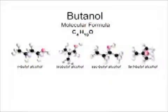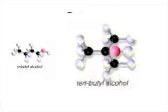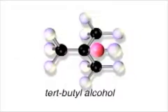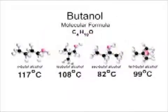In secondary butyl alcohol, the OH group is attached to one of the two inside carbon atoms in the four-carbon chain. In tertiary butyl alcohol, the OH group is attached to the central carbon atom, which also contains a methyl group. The four butyl alcohols differ in their physical and chemical properties, for example in their boiling points.